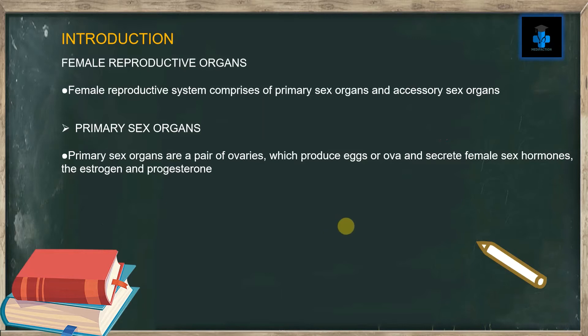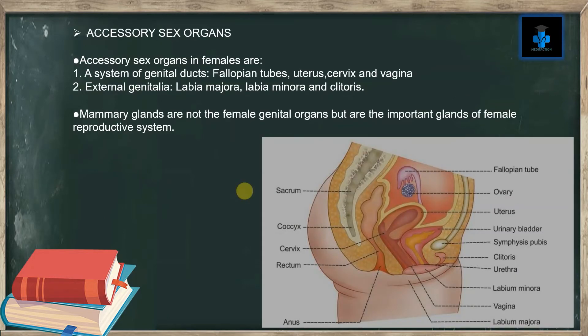The female reproductive system comprises primary sex organs and accessory sex organs. The primary sex organs are a pair of ovaries, which produce eggs or ova and secrete female sex hormones — estrogen and progesterone.